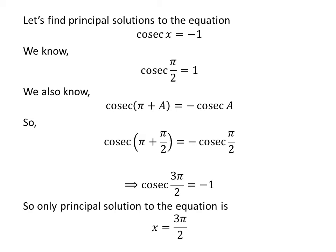There is only one principal solution to the equation cosecant of x is equal to minus 1, which is 3 times pi upon 2.